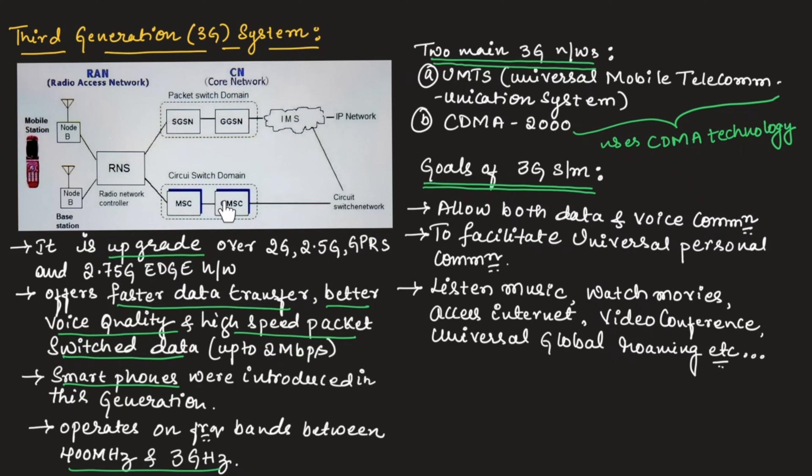GMSE is gateway mobile switching center. SGSN is service GPRS support node. GGSN is gateway GPRS support node, and IMS is IP multimedia system. It can support both data communication as well as voice communication. It also facilitates universal personal communication between the users.